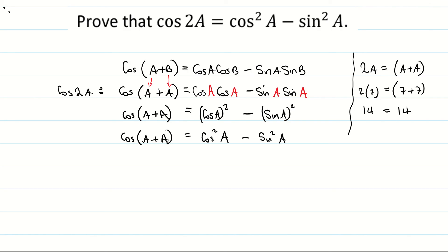And we're basically done, that's our proof. I'm just going to rewrite that. Instead of writing it as cos a plus a I'm going to write it as, well what is a plus a? It's 2a. So cos 2a equals cos squared a minus sin squared a.